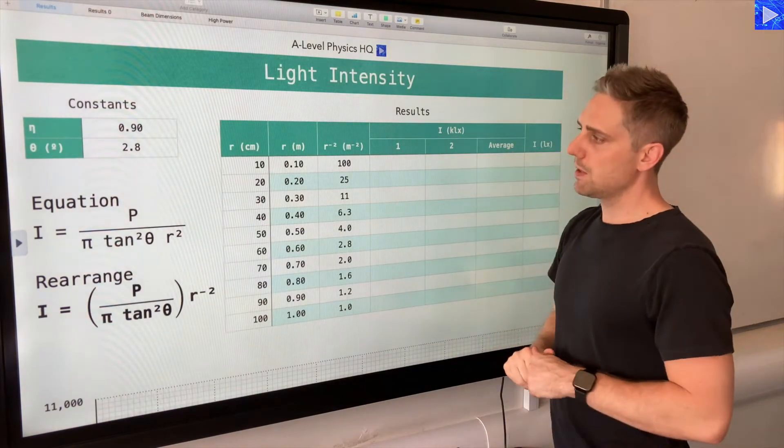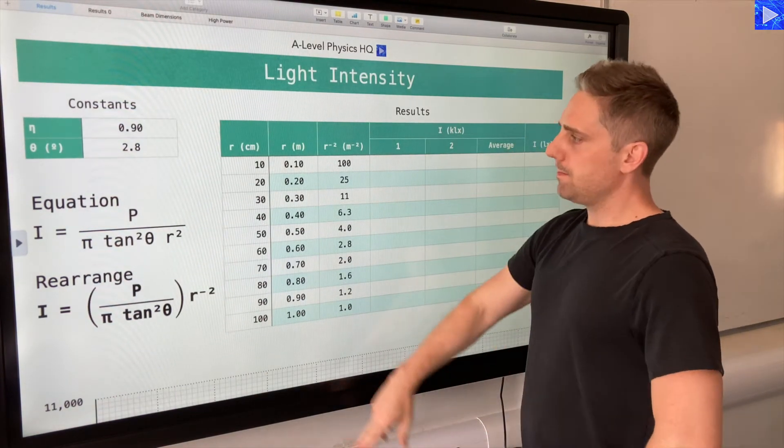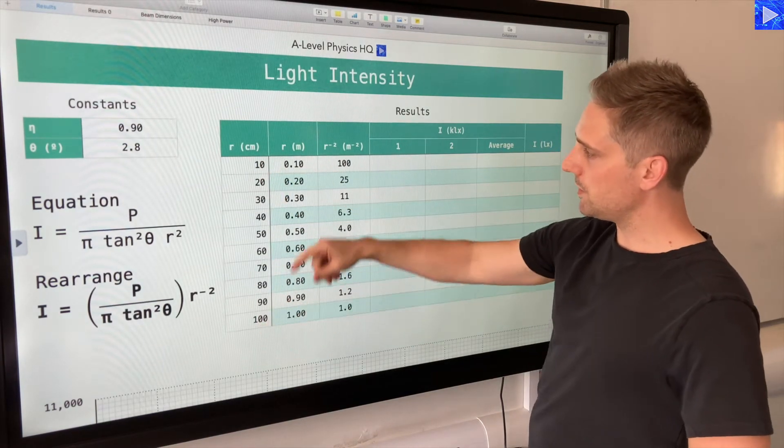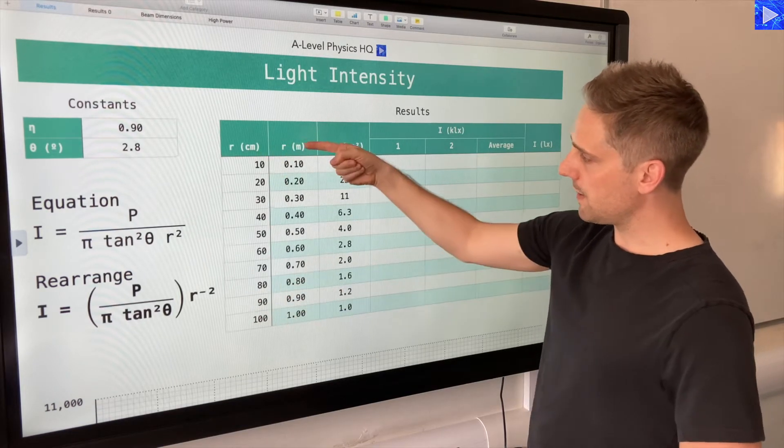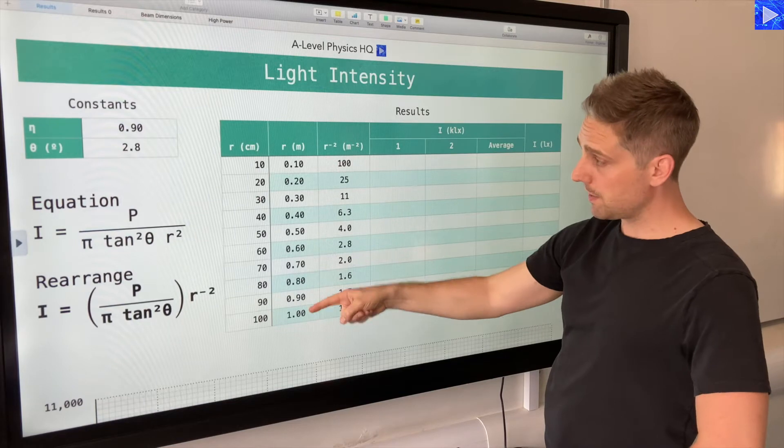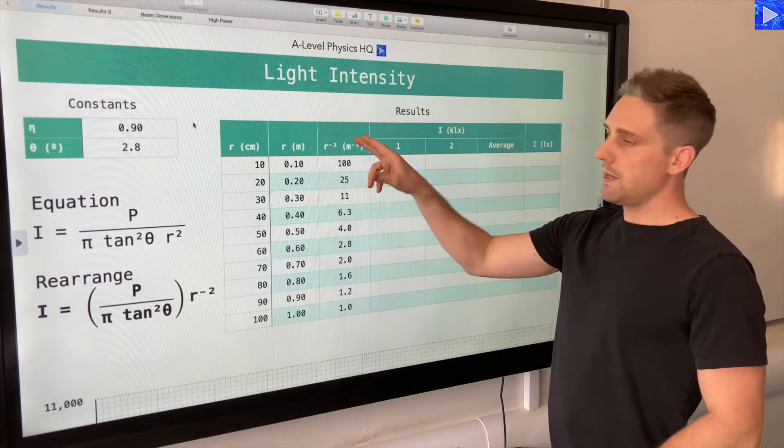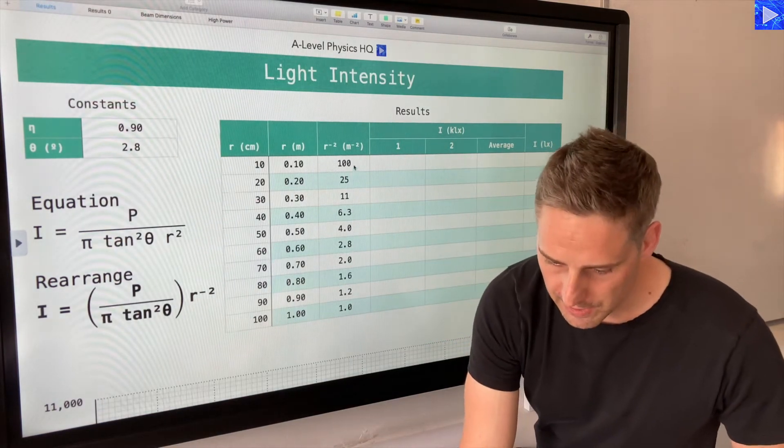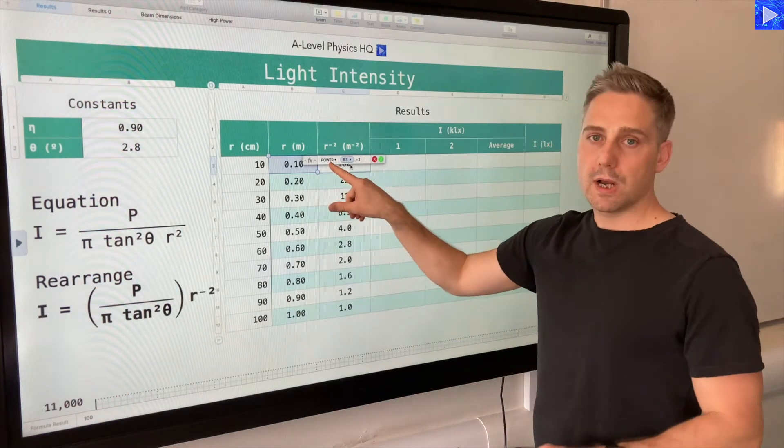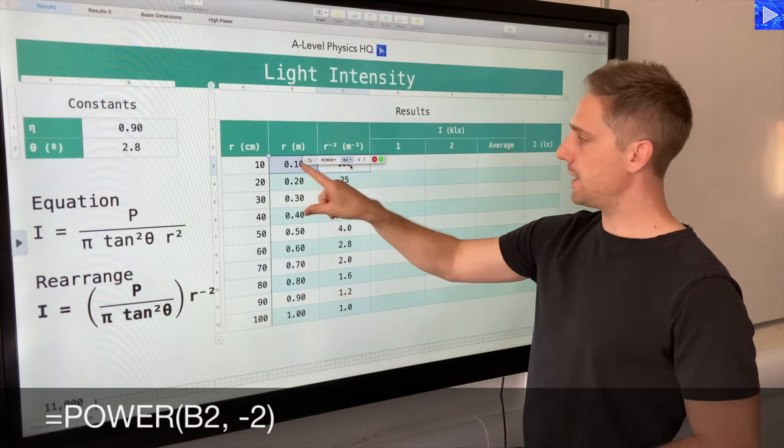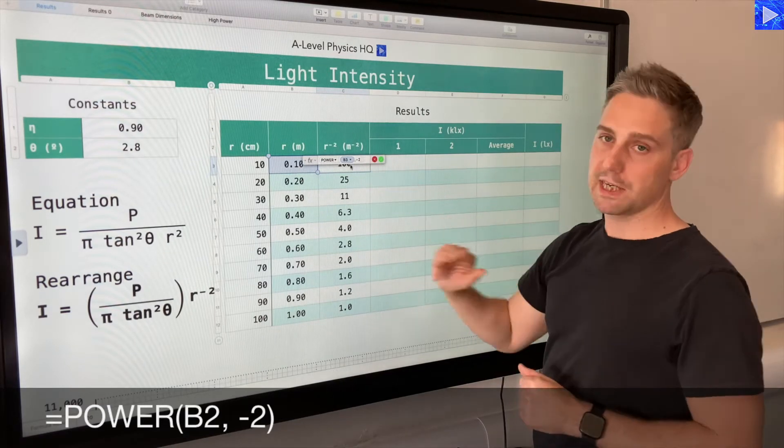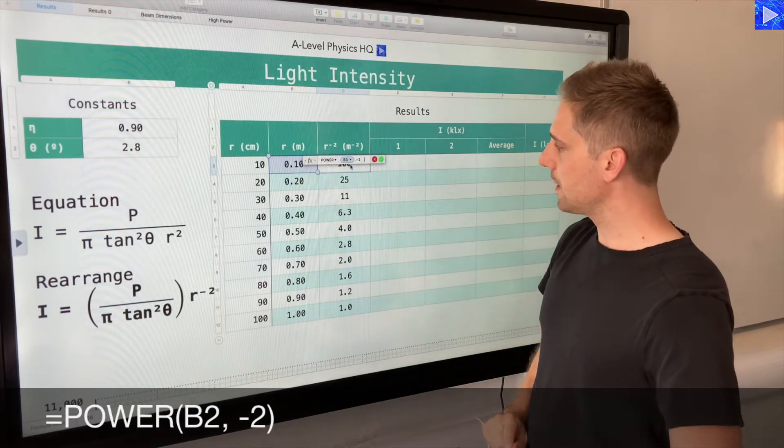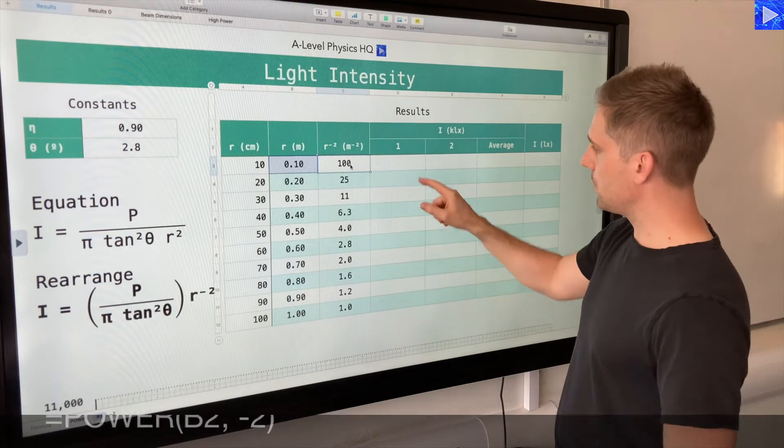So we were measuring over these distances here, 10 centimeters to 100 centimeters. I put those in centimeters here and then I've just done a conversion into meters here, so just dividing that by 100. And then these are the r to the minus 2 values. We'll be plotting those on the graph. So here we have the power equation, so power of this value here, and the power that I'm raising it to is minus 2. So it's very straightforward, working out the reciprocal of that squared in mathematical terms.